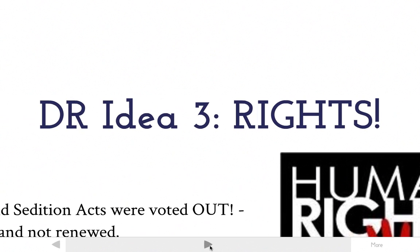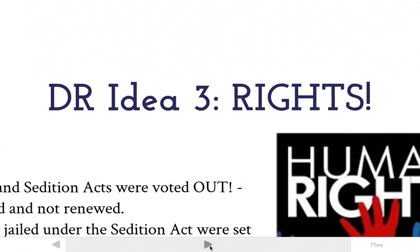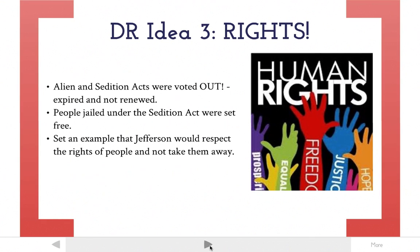Democratic-Republican idea number three is rights — human rights and natural rights for people. Jefferson allows the Alien and Sedition Acts to run out; they had a time limit on them, so he just lets them expire. Everybody that was put in jail by John Adams under the Sedition Act was let go and freed from prison. This sends a message to the American public that Jefferson is going to respect the Bill of Rights and the rights of the people.